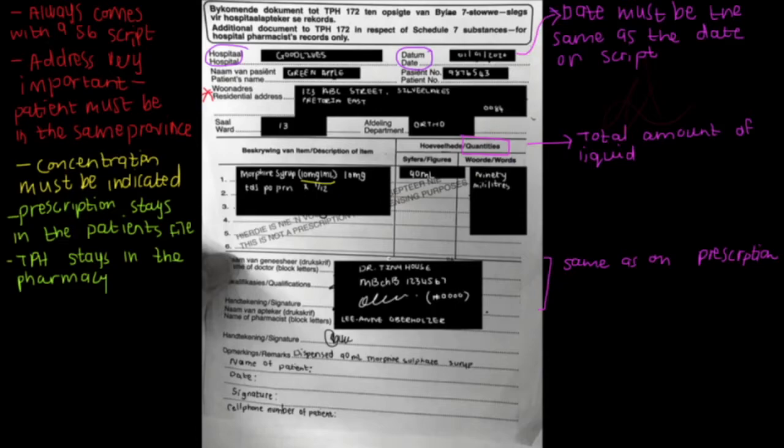What you have to write, though, is name of the patient or the nurse that's collecting the medicine, the date, signature of the person collecting, and if it's a patient, the cell phone number.